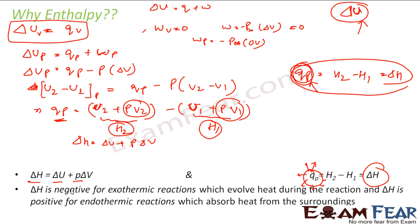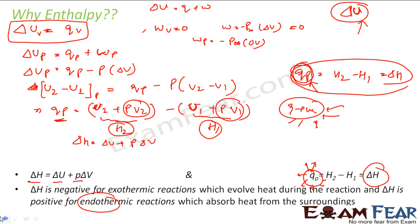Change in enthalpy is negative for exothermic reactions, which give out heat. Change in enthalpy is positive for endothermic reactions, which absorb heat. If Q is positive, the system has absorbed heat, meaning it is endothermic. If Q is negative, the system has given out heat, meaning it is exothermic.